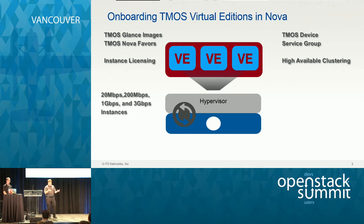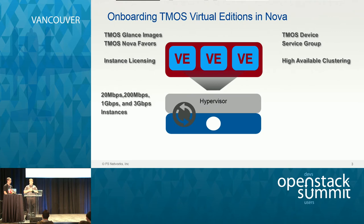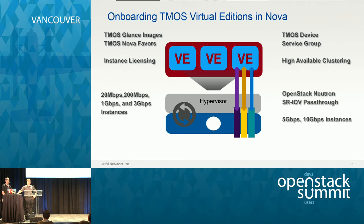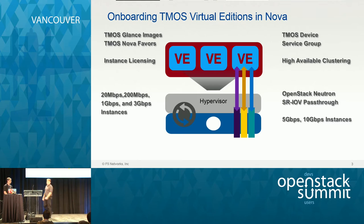What kind of workloads? 20 meg, 200 meg, 1 gig, 3 gig instances — those all pretty much can work on top of most software networking solutions. But how well are the vSwitches working at higher speeds, 5 gig and 10 gig? Neutron added SRIOV in Juno — so of course we should support that. Do you have SRIOV support in your software load balancer? You should. We have SRIOV support to get you to the 5 gig and 10 gig instances of our software appliances.